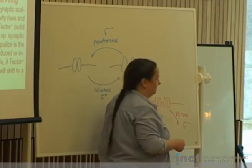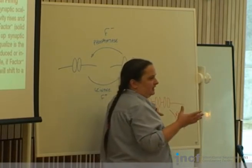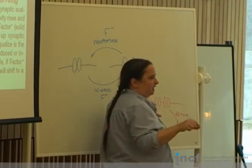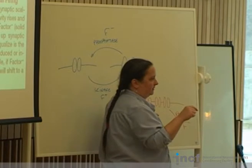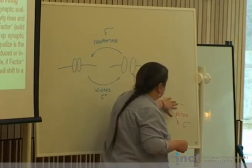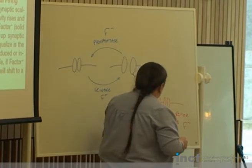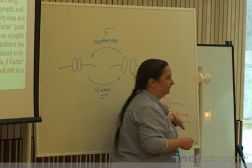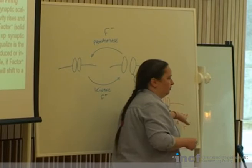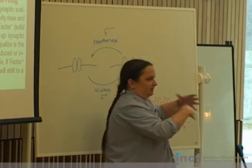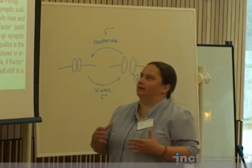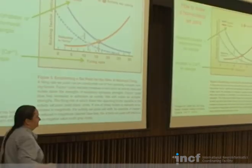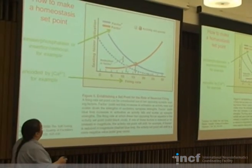Another way — and this is actually what Gina Turgiano studies in actual synaptic scaling — is that insertion and removal of postsynaptic receptor channels plays a big role. You'd have a factor that inserts new channels into the membrane and another factor that removes them. Again, the insertion and removal pathways will arrive at some kind of equilibrium.